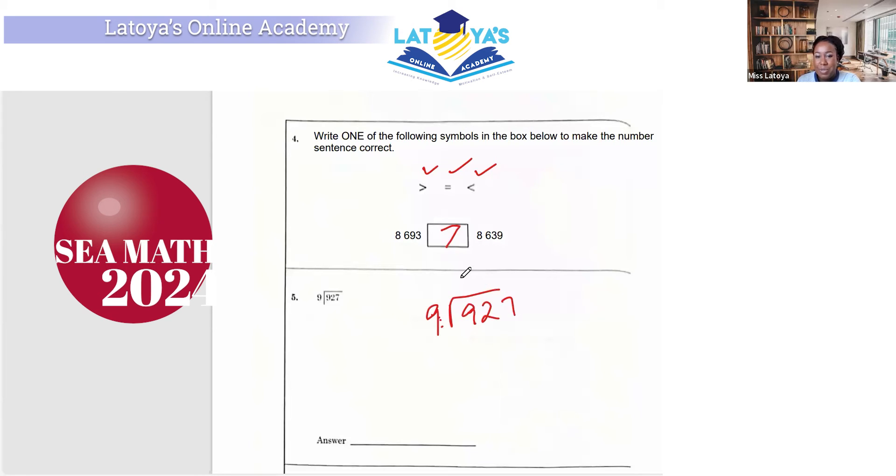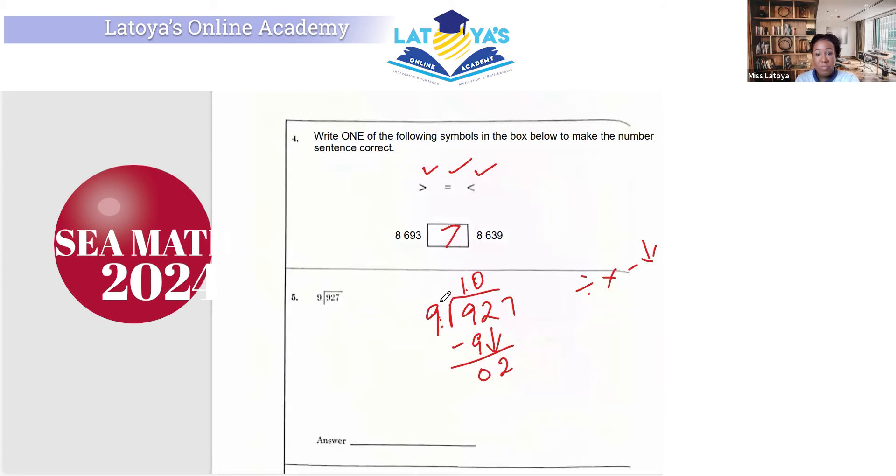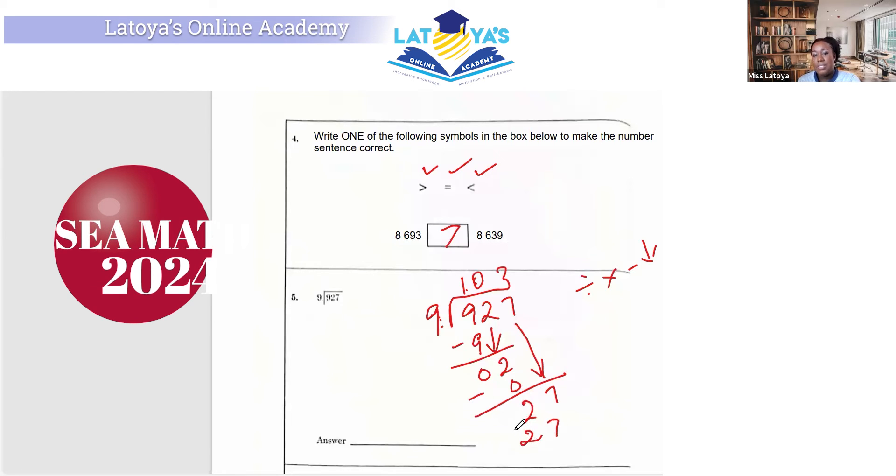So I'm going to do long division for some of you who may not be good at division yet. The steps in long division: you divide, multiply, subtract, bring down, and you repeat. So it's going to be 9 into 9 is 1, 1 times 9, you take away, you bring down. 9 into 2 is 0, and if you multiply 9 by 0, you are going to get 0. Then you subtract. 2 take away 0 is 2, and then you bring down. Now you have to say 9 into 27, and this is going to give us 3. 9 threes are 27. So again, 9 into 927, the answer is 103.